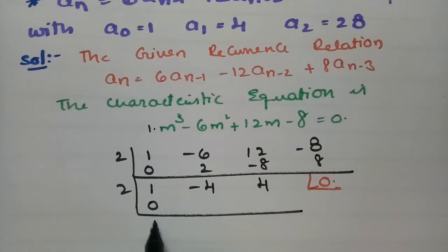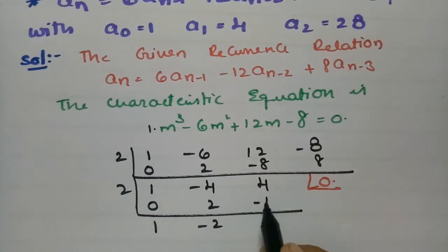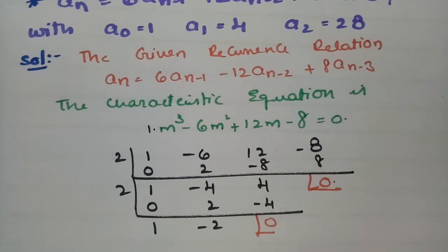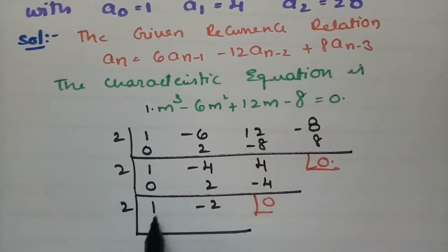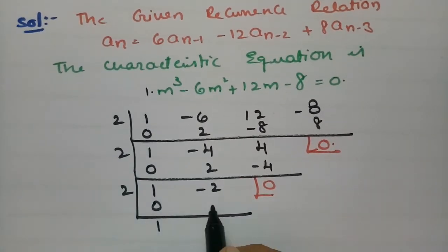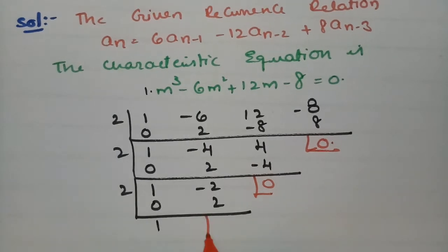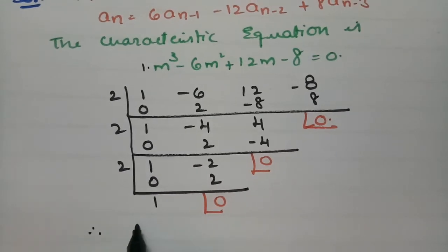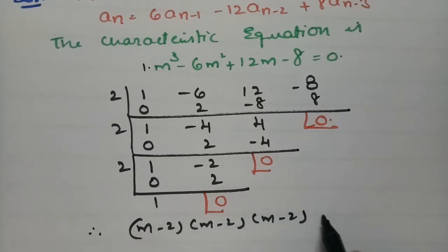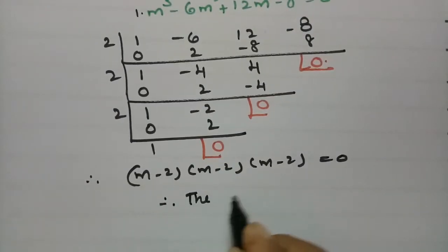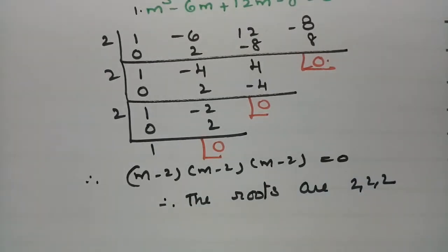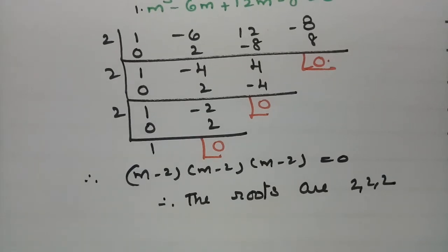Checking again with m = 2: 1, 2 once gives 2, and -2, giving -4, again becoming 0. Checking once more with m = 2: 1, 2 gives 2, and this value equals 0. So the equation factors as (m - 2)(m - 2)(m - 2) = 0.